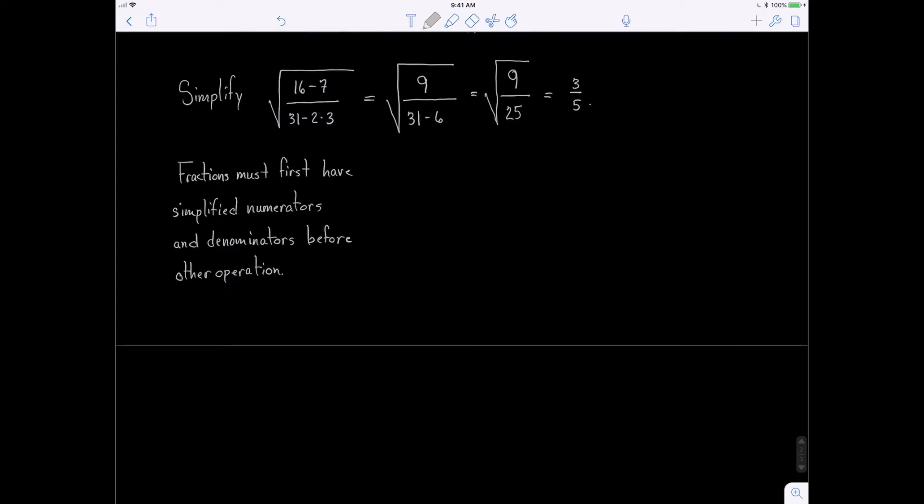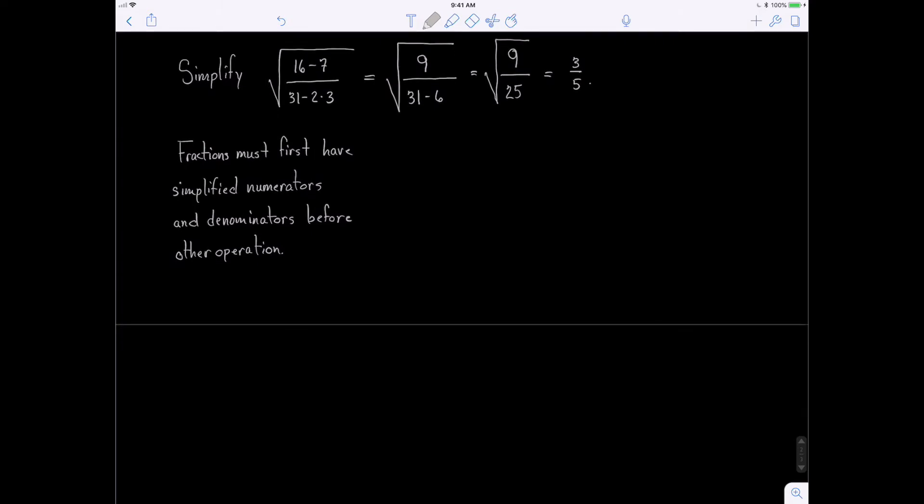Now I want to show you one more fraction problem that happens quite regularly. Say I have the problem of 1 minus 2, divide that by 5. Now this is, let me do it right. If I follow the directions up above, I first have to take the 1 minus the 2. Well, 1 minus 2, that's going to be a negative 1 divided by 5. If I put that in the calculator, I can come up with a negative 0.2.